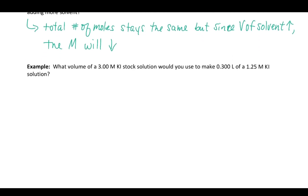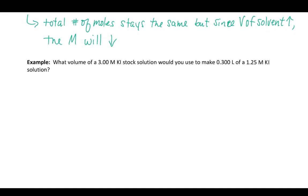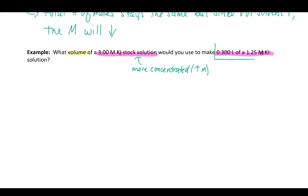So, let's take a look at how we would calculate and solve for a volume or a molarity. We solve for them the same way in a problem like this. We want to know what volume of 3 molar potassium iodide, this is KI, stock solution, would you use to make a 0.3 liter solution of 1.25 molar KI? So, a couple things here. Stock solution, this is going to be more concentrated. That's going to mean we're going to have a higher molarity, which we obviously do here, 3 molar versus 1.25 molar.